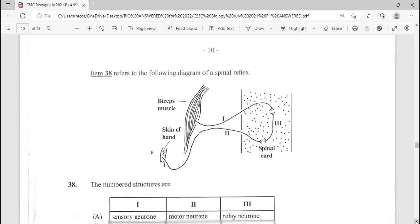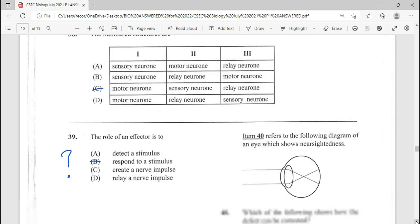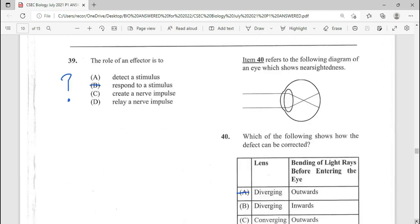And we move on. There will be no editing of this video. 38 refers to the following diagram of a spinal reflex. It's a repeated question. The numbered structures are, please pay attention to the number, and it's 1, 3, 2, not 1, 2, 3. Our answer here is going to be C. Motor neuron, sensory neuron, and of course relay neuron.